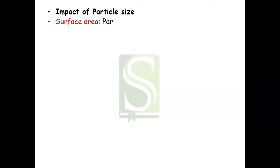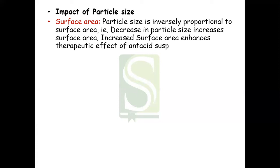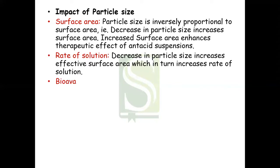The first impact of particle size is observed on surface area. Particle size is inversely proportional to the surface area — that is, a decrease in particle size results in an increase in surface area. We want increased surface area because it enhances the therapeutic effect of any drug. If the particle size is small, then dissolution rate of that drug is increased. The best example is griseofulvin — if you reduce the particle size to around 15 micrometers, the solubility of griseofulvin is increased. This is also very important in case of antacid suspensions.